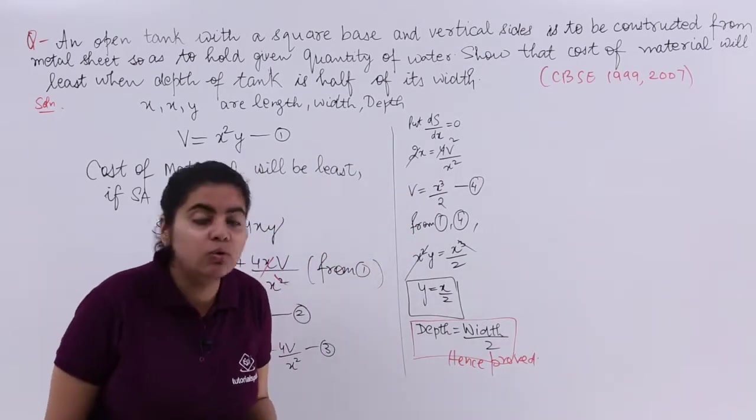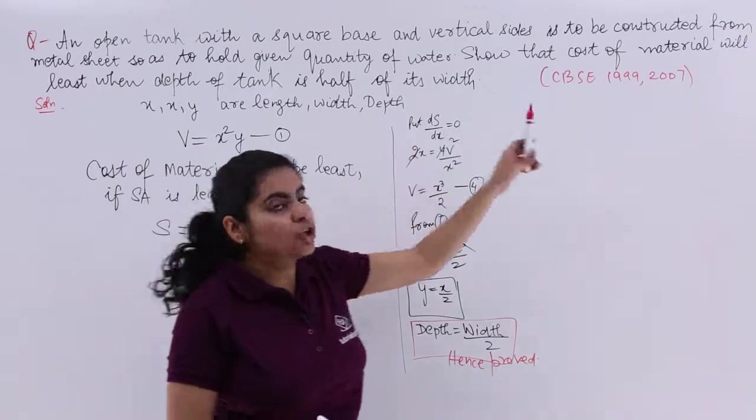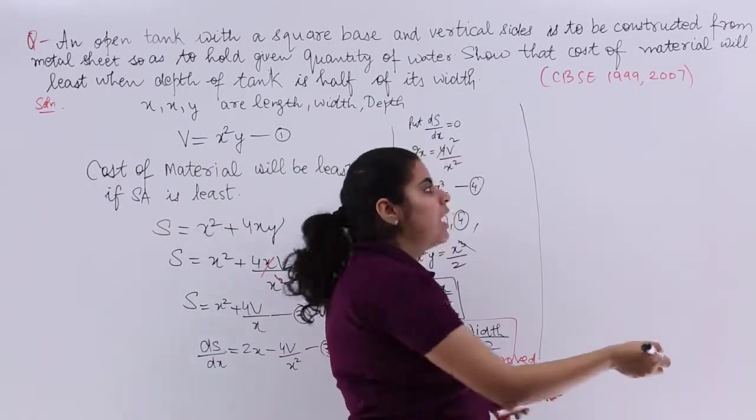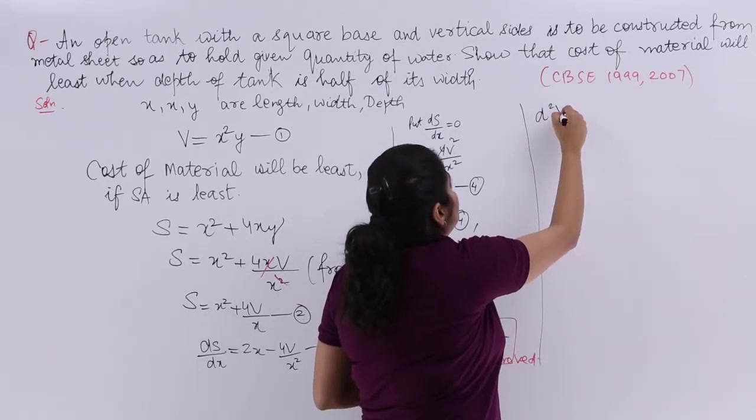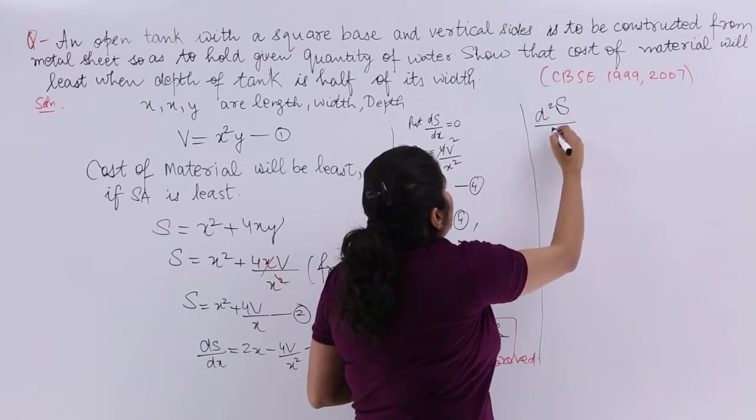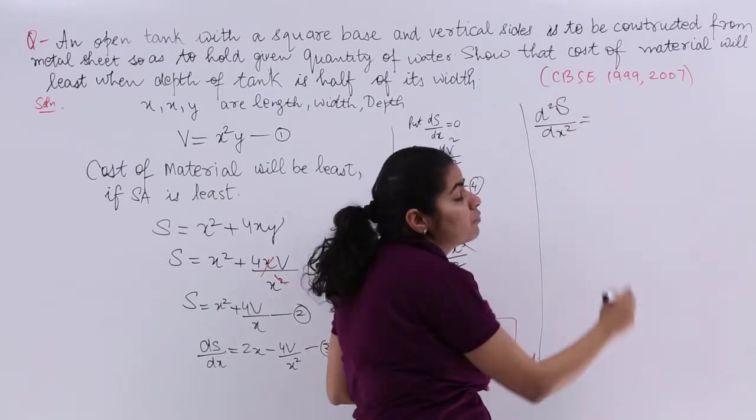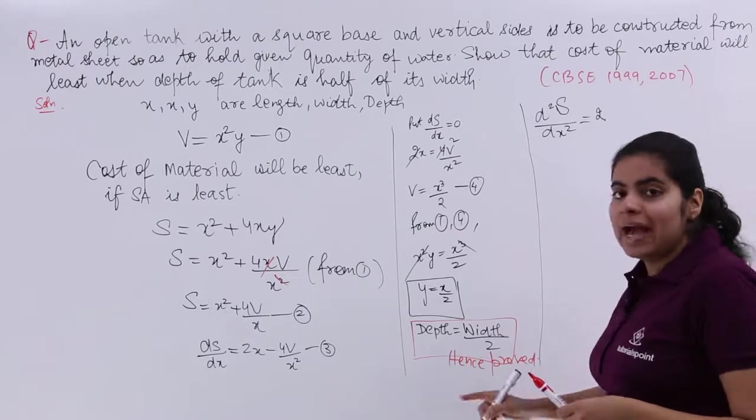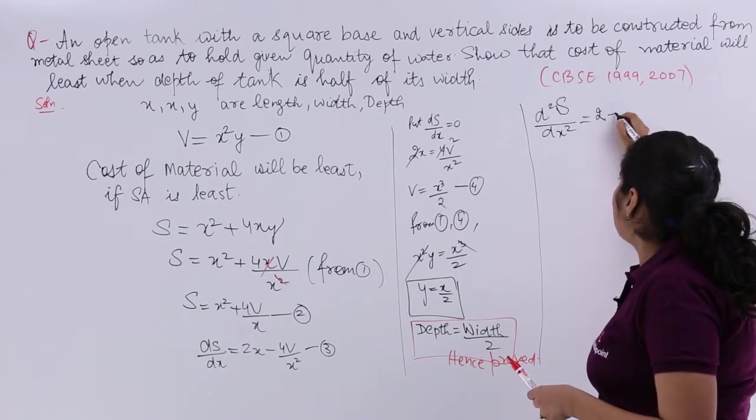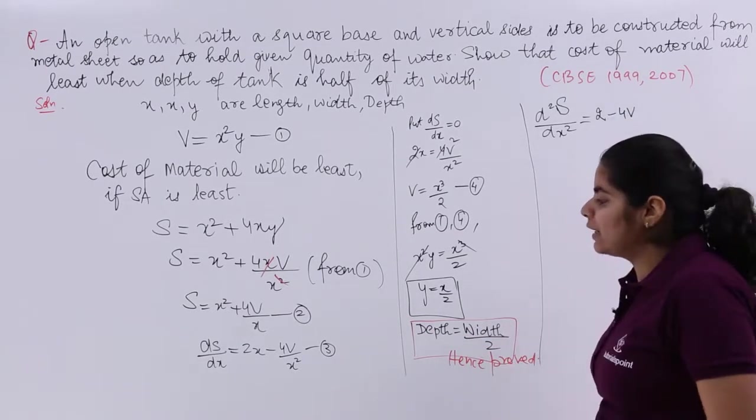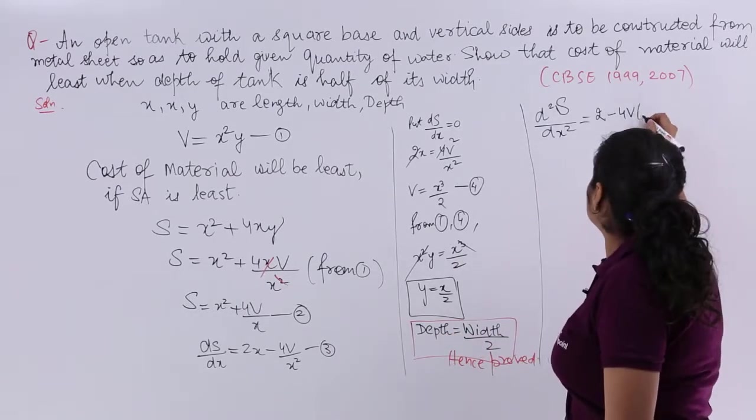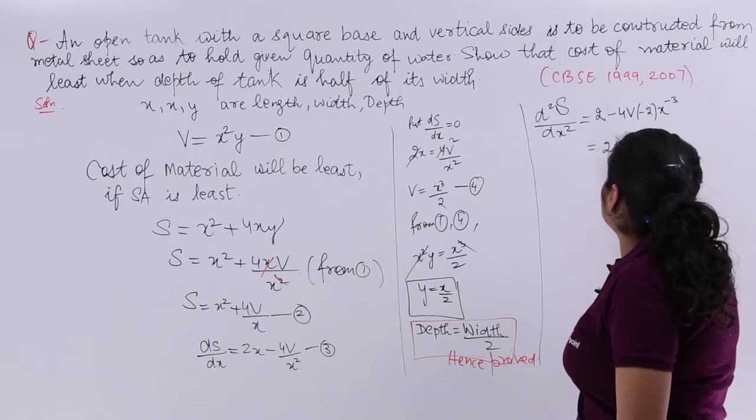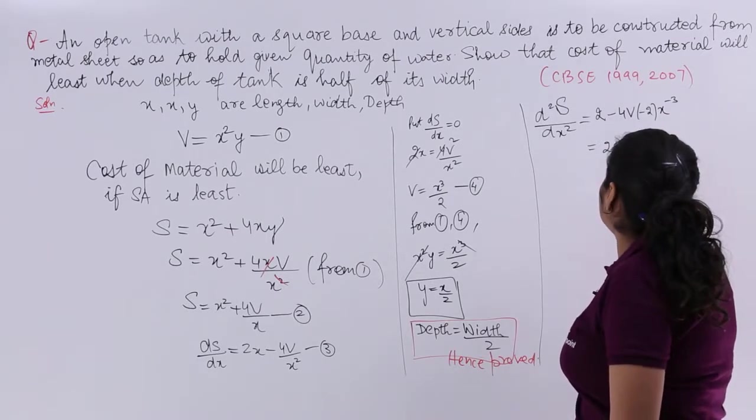No, because we need to prove that the cost of material will be least. So for least, you have to find the higher order derivative. So the second derivative is d²S/dx². Find out the second derivative. So here it is 2, and minus 4V is there. This is x^(-2), so derivative is -2x^(-3), which gives 2 + 8V/x³.